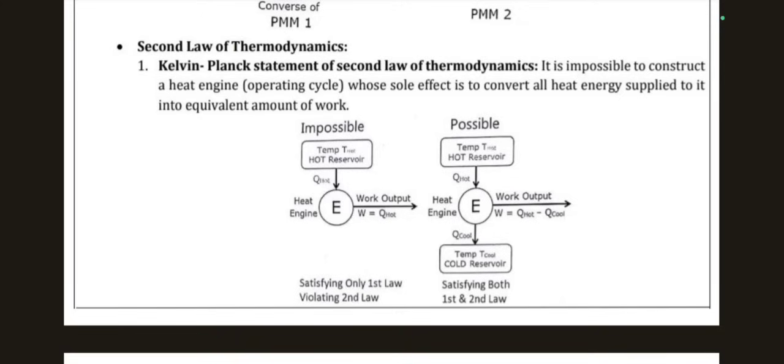The Kelvin-Planck statement deals with heat engines. A heat engine is defined as a cyclic device used for converting heat into work continuously. In the possible case satisfying both laws, heat comes from the hot reservoir into the heat engine, some goes to the cold reservoir, and work output equals Q_hot minus Q_cool (Q1 minus Q2). This work output is necessary for the cycle to be possible.